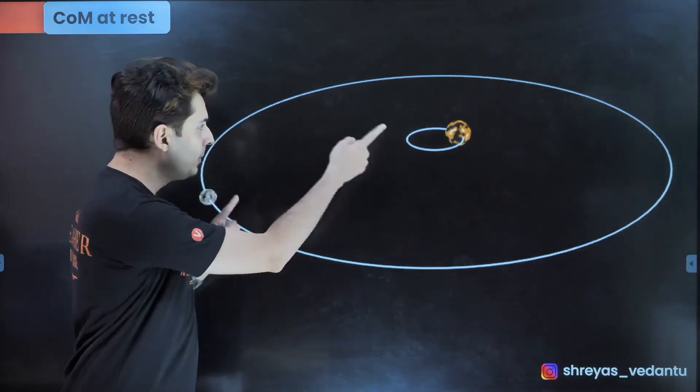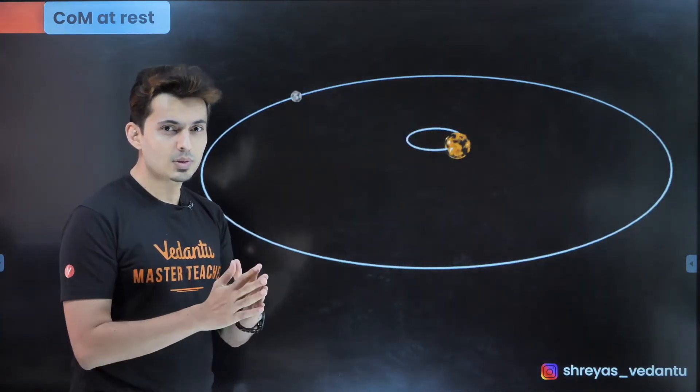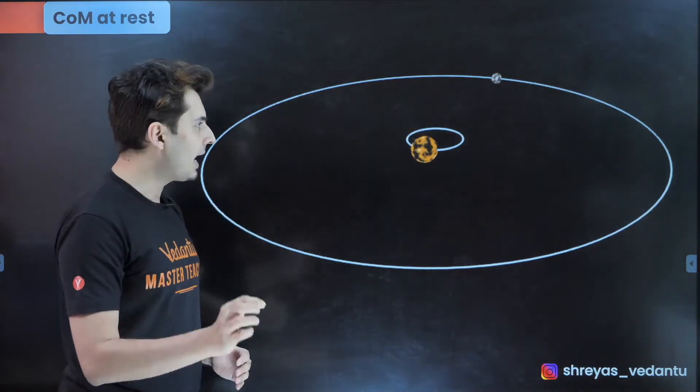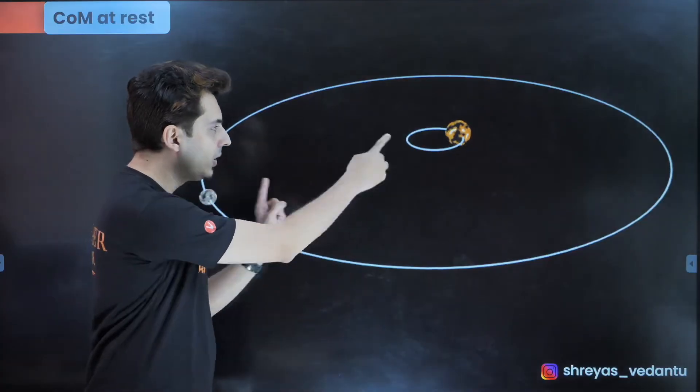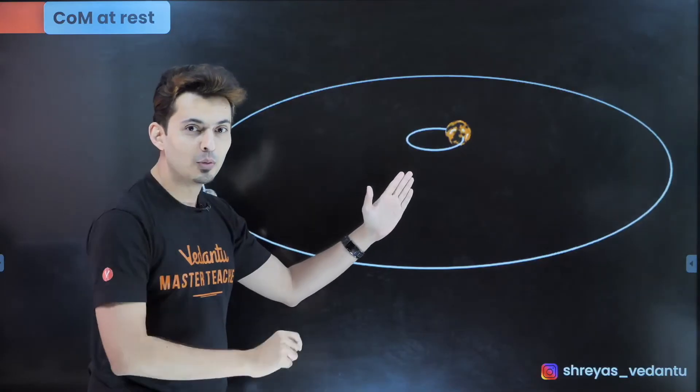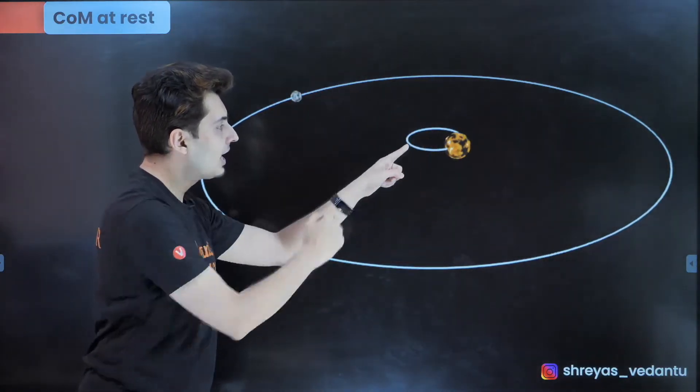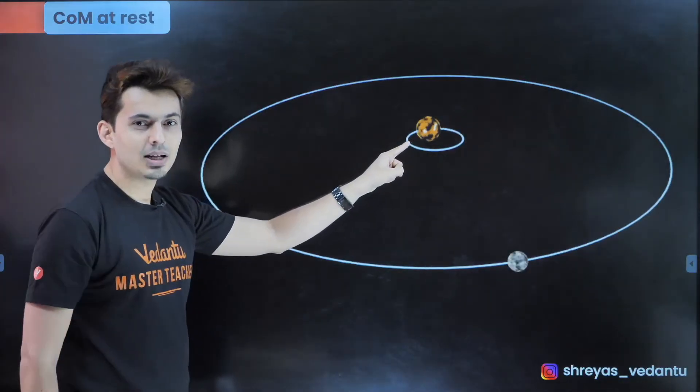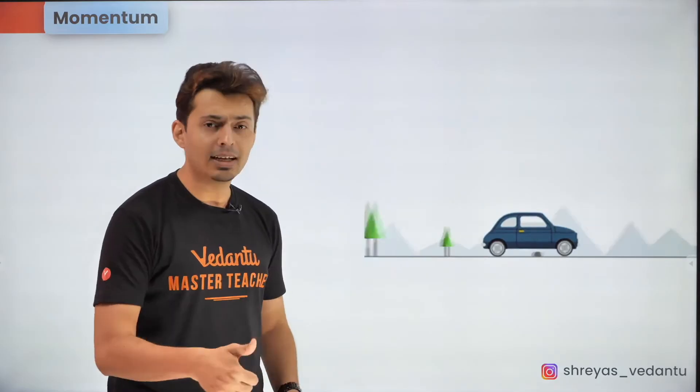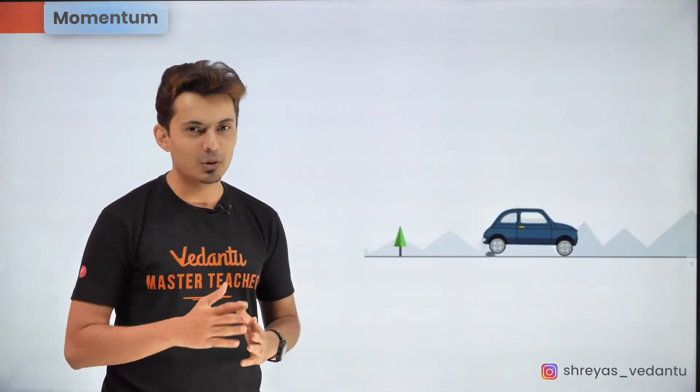When you have two planets revolving around each other because of their mutual force of gravity that force becomes an internal force due to the absence of any external forces on this twin planet system you will see that their center of mass will not move and both the planets actually end up revolving around their common center of mass. If you are enjoying this video do not forget to go ahead and smash that like button out there because that's the only way you can show your love and support towards me.